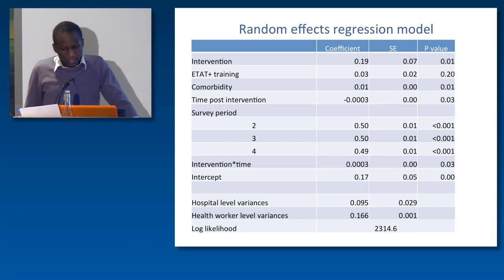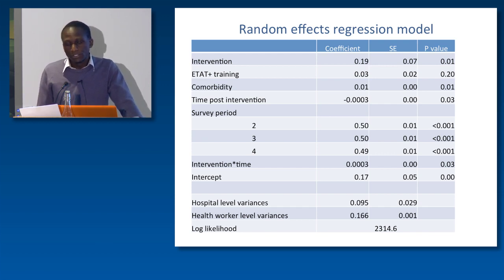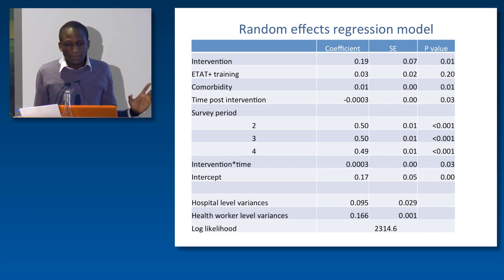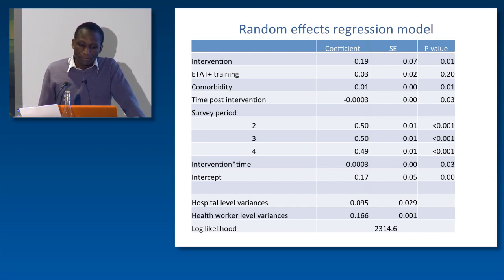In terms of the time coefficient post-intervention, you can see a negative coefficient, meaning that clinician performance in terms of quality of care declines with time after the intervention involving training. So in the period post-training, the effect of the intervention reduces over time. Where you see an asterisk, that tests an interaction between the implementation of the intervention and time, meaning that the rate of decline in clinician performance post-intervention varies across our facilities.